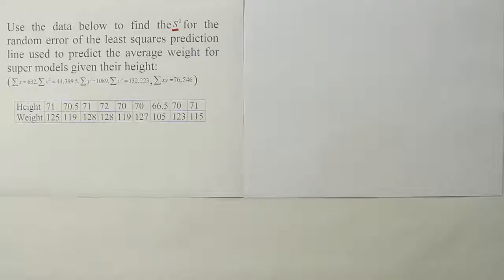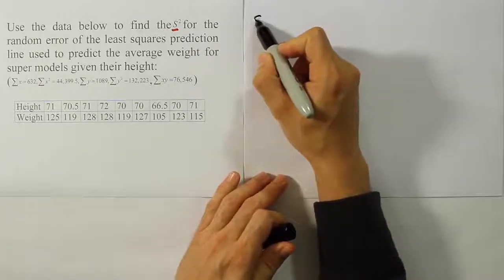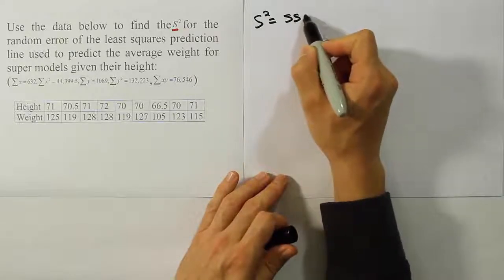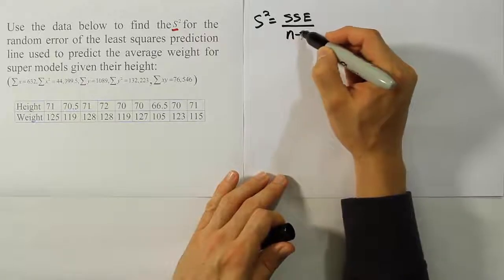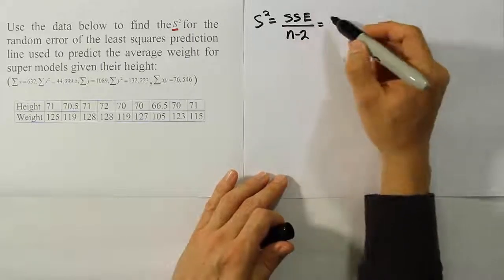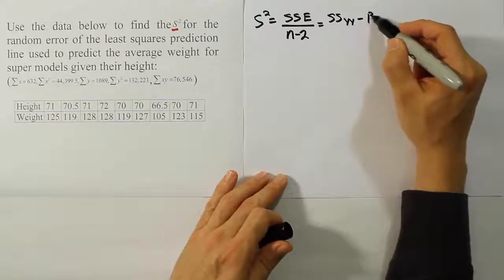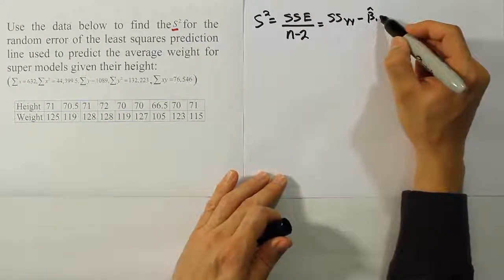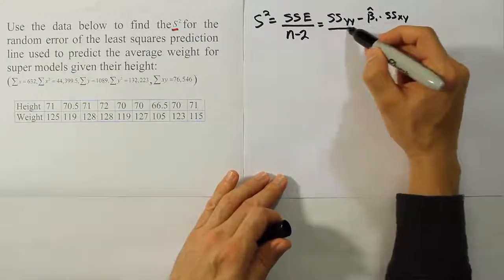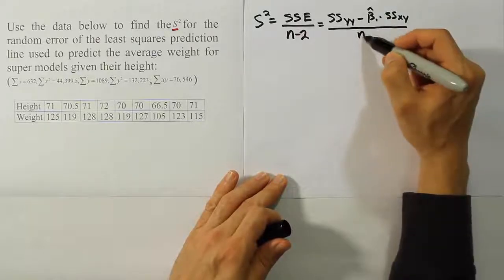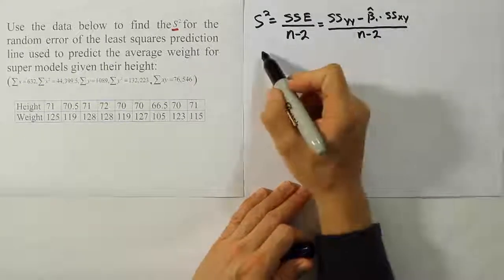To calculate S squared we need a formula and the formula turns out to be this: S squared equals the sum of squares for the error term divided by n minus 2, where the sum of squares for the error term is defined as SSYY minus beta 1 hat, the estimate for the slope, times SSXY the mixed term, and all that again is under n minus 2. To get these quantities on the top here we're going to need the sum of square values.